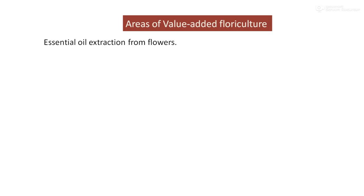Areas of Value Added Floriculture: from floriculture, the most important type of product which is prepared worldwide is essential oil extraction. Most flowers like tuberose, rose, and jasmine are mainly used for the extraction of essential oil, which has great value in the perfume industry.